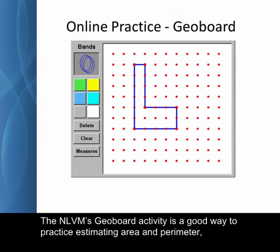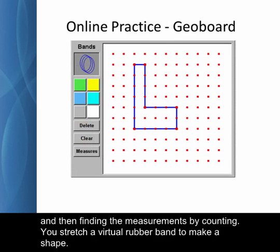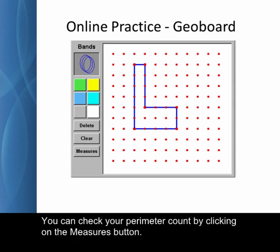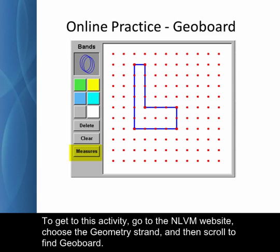The NLVM's geoboard activity is a good way to practice estimating area and perimeter and then finding the measurements by counting. You stretch a virtual rubber band to make a shape. This shape has area 12 square units and perimeter 20 units. You can check your perimeter count by clicking on the measures button. To get to this activity, go to the NLVM website, choose the geometry strand, and then scroll to find geoboard.